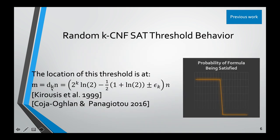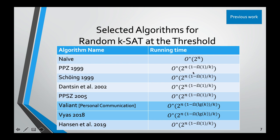The threshold is at this particular function of K and N: M depends on K and N roughly as 2^K times ln 2 minus an epsilon, where epsilon is some vanishing number. At the threshold, there are some algorithms that work in the random case. A bunch of these are just worst-case algorithms applied to the random case and get no improvement. Recently, a couple of new algorithms got a small improvement, gaining a log K factor in the exponent. Our algorithm will improve slightly upon those two algorithms.